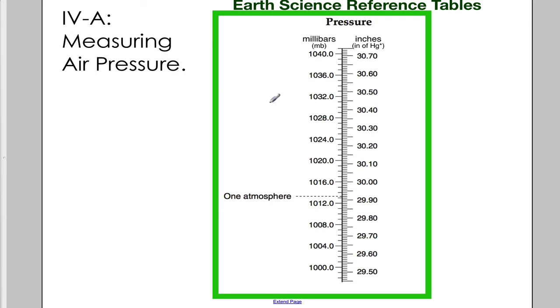In order to measure air pressure, we use a scale measuring in millibars and in inches, and an instrument called a barometer. This scale is in your reference tables, and if you need to convert from millibars to inches, you simply just read from one side of the chart to the other. That will give you the conversion from metric to standard units. One atmosphere average pressure hovers around here.